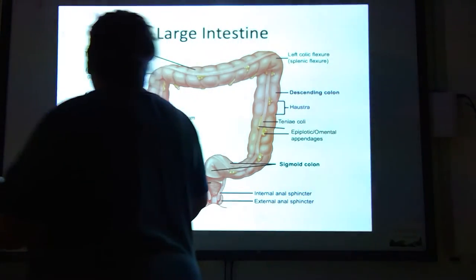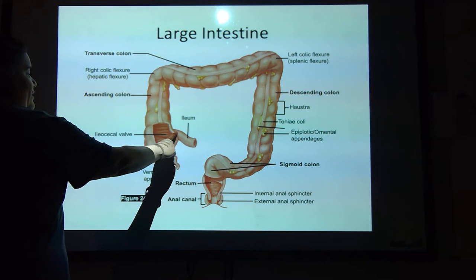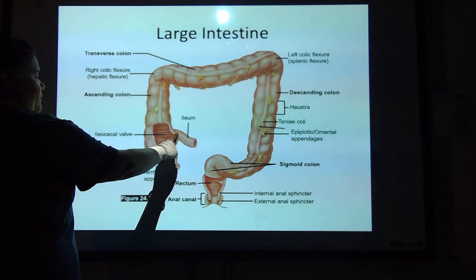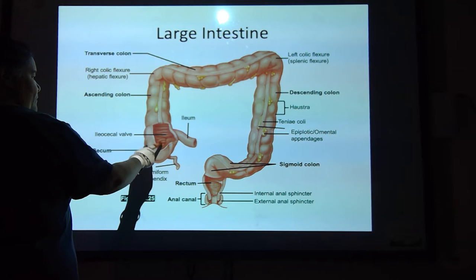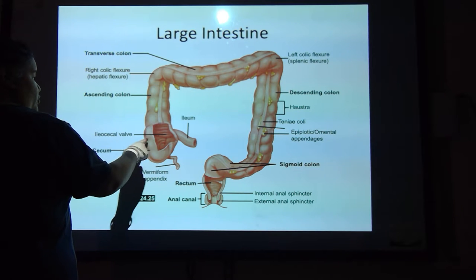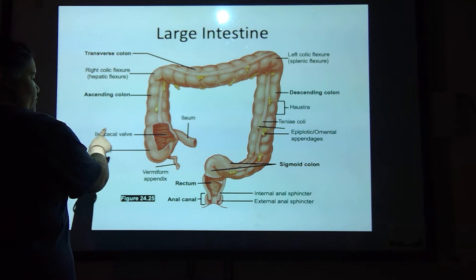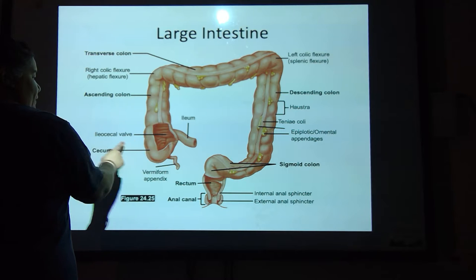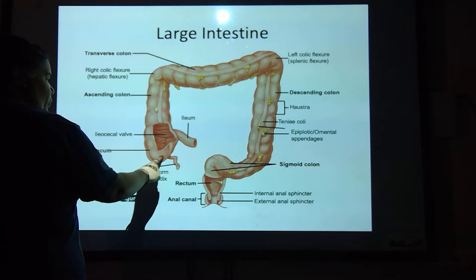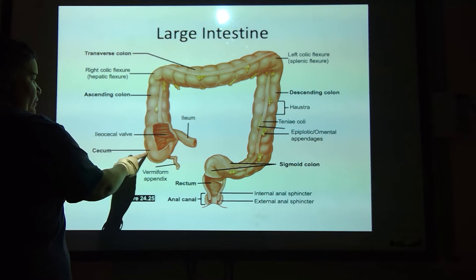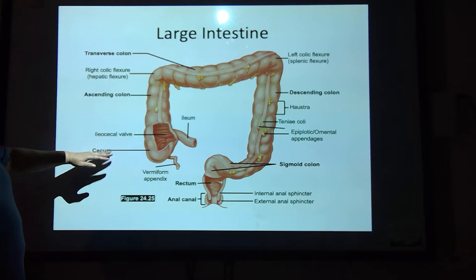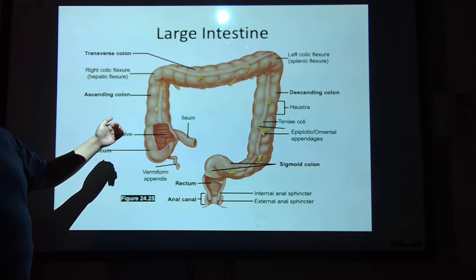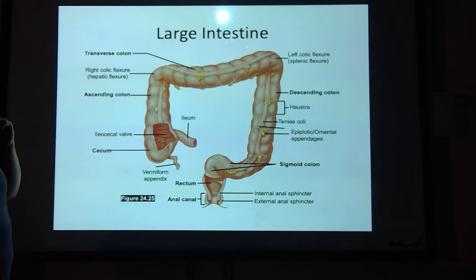Here's our large intestine. There's that end of the ileum. As this comes in, the connection between the ileum and the large intestine is called the ileocecal valve. See this part that kind of dips down a bit? This is actually called the cecum. So you've got the cecum and the ileum coming together — that's the ileocecal valve.